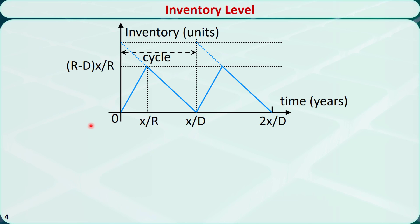This figure shows the inventory level of the EPQ model. At the beginning, we produce at a rate of R units per year and at the same time consume at a rate of D units per year. So the inventory level increases at a rate of R minus D, which is the slope of this line. After the production period is finished, the inventory level will decrease at the normal consumption rate of D. After the inventory level decreases to zero, another production run will start. This is the cycle.